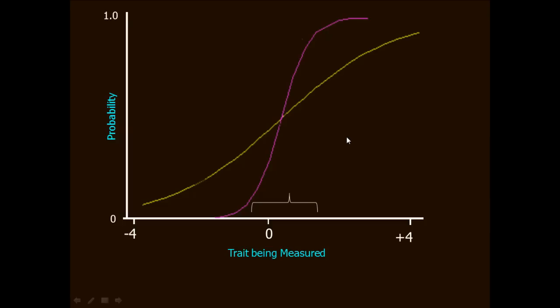In that range of the continuum, you can see that small changes in trait level equal really big changes in the probability of endorsing the item. So, what that means is that it helps you discriminate between persons who are close to the same level of trait, but not exactly the same level of trait. You want items to do that for you because it gives you measurement precision. It sorts people out at fine levels of discrimination.